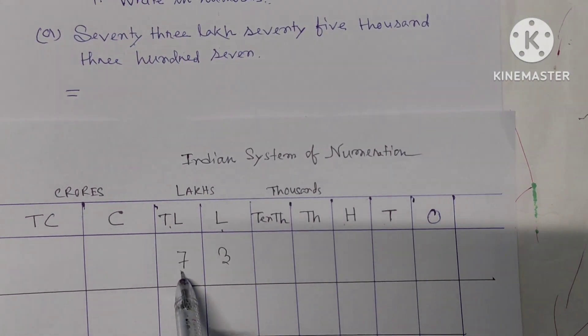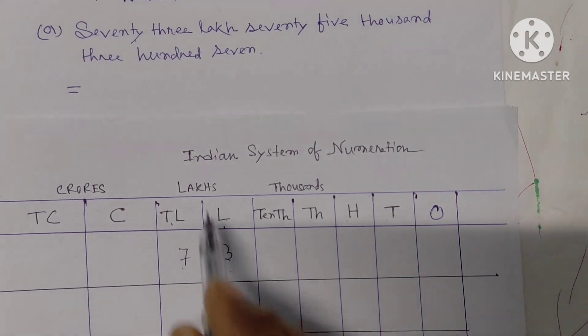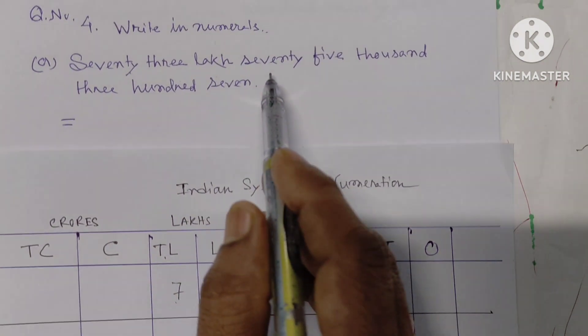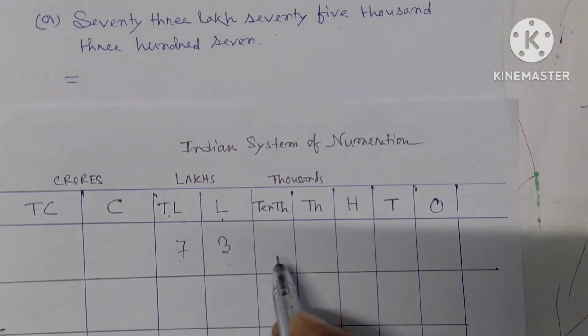Ten lakhs place is 7, lakhs place is 3. Then 75 thousand: ten thousands is 7, thousands is 5.